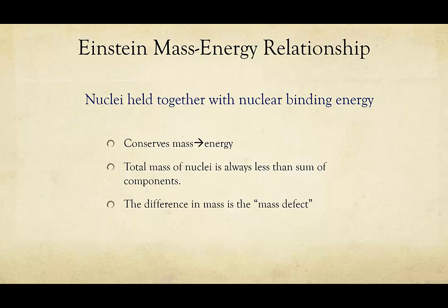Nuclei are held together with what we call nuclear binding energy. In this process, mass is converted into energy. If you add up the component parts of a nuclei, the protons and neutrons, or all of the components of an atom—neutrons, protons, and electrons—what you'll find is that the masses don't add up. The mass of the nuclei is always less than what you would expect. This difference is called the mass defect.